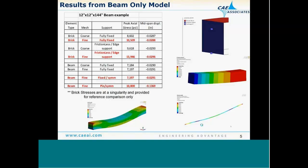For the beam-only model, I can use either a fixed constraint or a pin constraint. These two boundary conditions typically bound the solution for any type of result. The displacement for the fixed condition is 0.029 inches, similar to what I get for the brick model. With a pin-pin connection I get significantly more displacement - 0.14 inches. These give two bounding solutions, but this probably isn't accurate enough for a particular design evaluation.